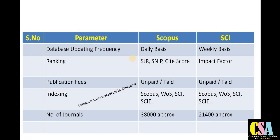Regarding the number of journals available right now: Scopus earlier had 41,000 but due to discontinuations and additions it is now approximately 38,000–40,000. The number changes daily so don't focus on fixed numbers — just focus on your journal category and research topic.